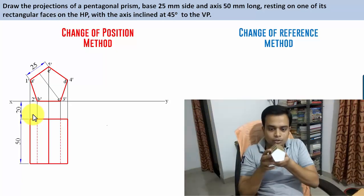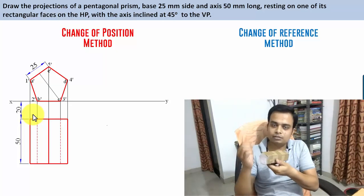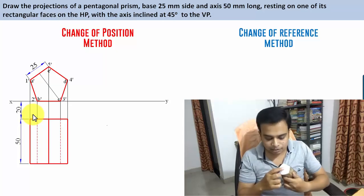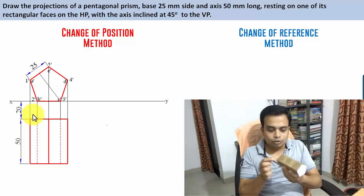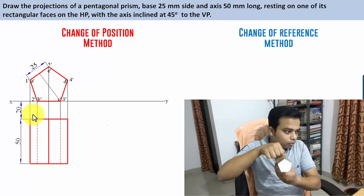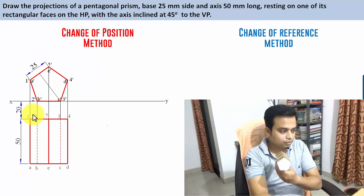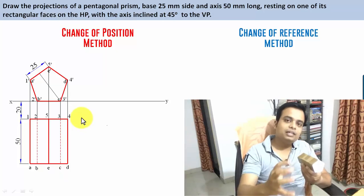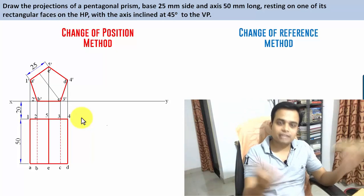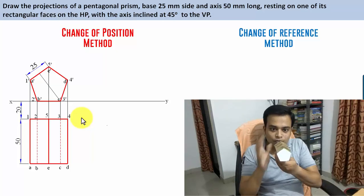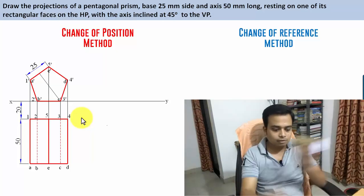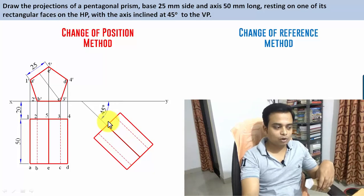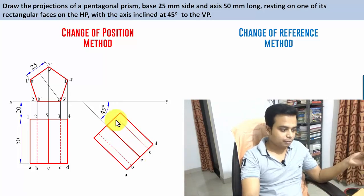In the second step, we are going to tilt the object at 45 degrees — in both cases the angle that the axis makes with the vertical plane should equal 45 degrees. The axis starts from here and ends here, so the axis is exactly below edge 5E. If I incline this 5E edge at an angle of 45 degrees, the axis will automatically get inclined at 45 degrees. So we'll be changing the position of the object from step one into step two — 45 degrees — and we recreate the entire top view at an angle of 45 degrees. Let me name the points A, B, C, D, E, 1, 2, 3, 4, 5.